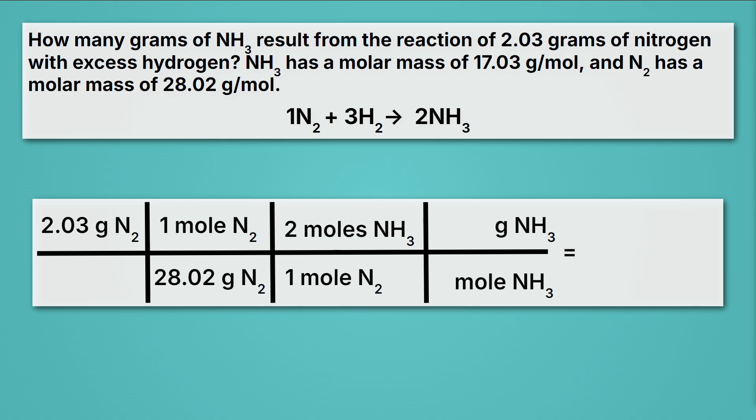So now grab your calculator. If you take 2.03, divide it by 28.02, multiply by 2, and then multiply by 17.03, you should get 2.4675 and some other digits. Keep in mind here that we're going to want to round to three sig figs, and that's because our nitrogen, our 2.03 grams of nitrogen has three sig figs. So we'll keep the first three, and that six will round up because of the seven after it. And we want to add our units grams. And then here in stoichiometry problems, we want to think about not just grams, but grams of what? Well, this is grams of NH3.